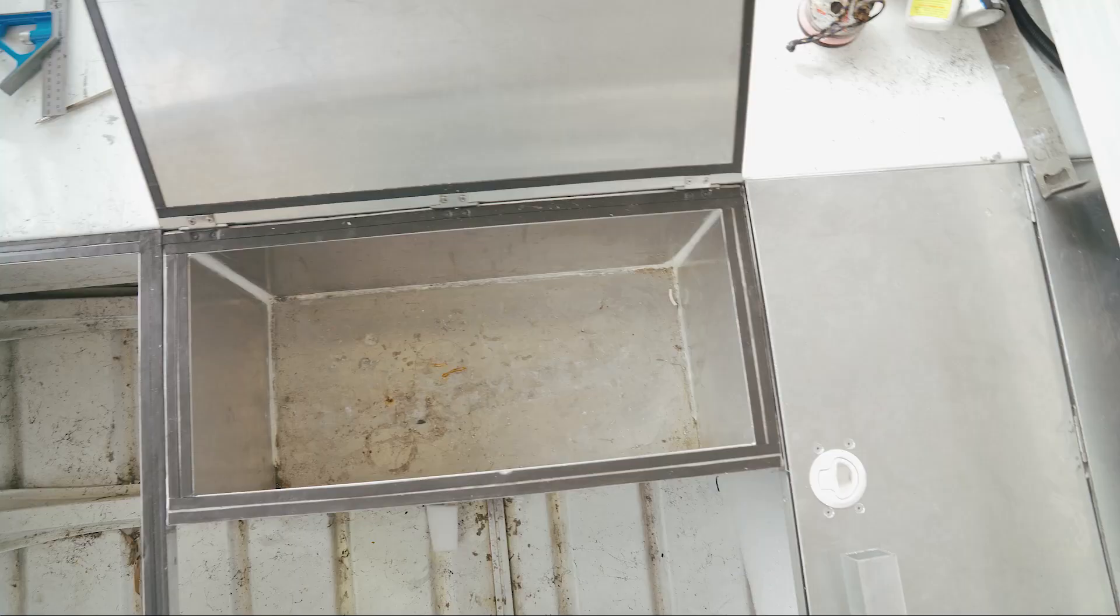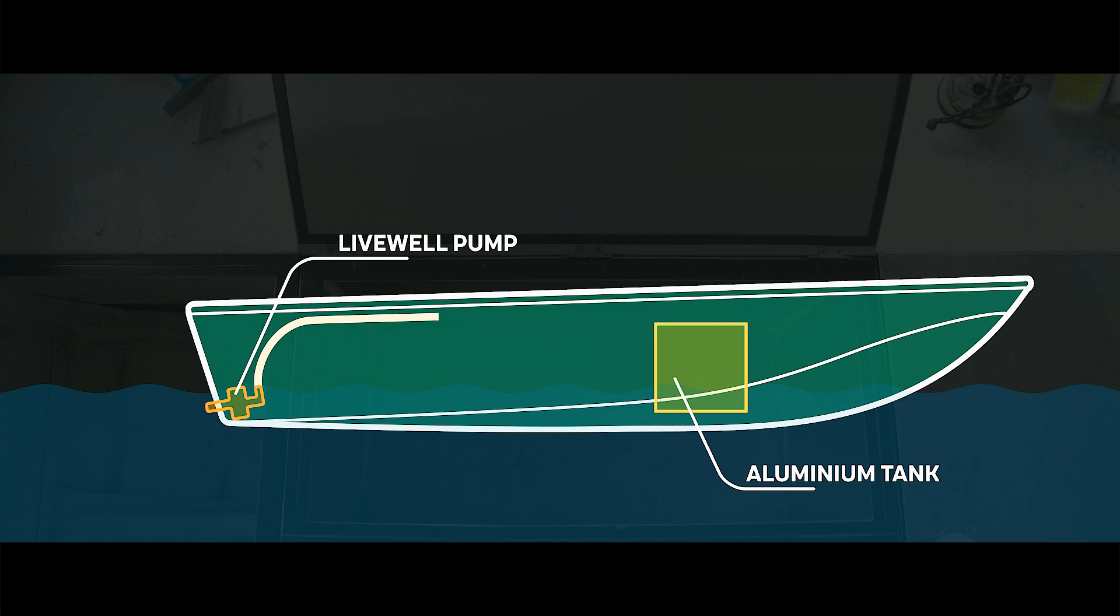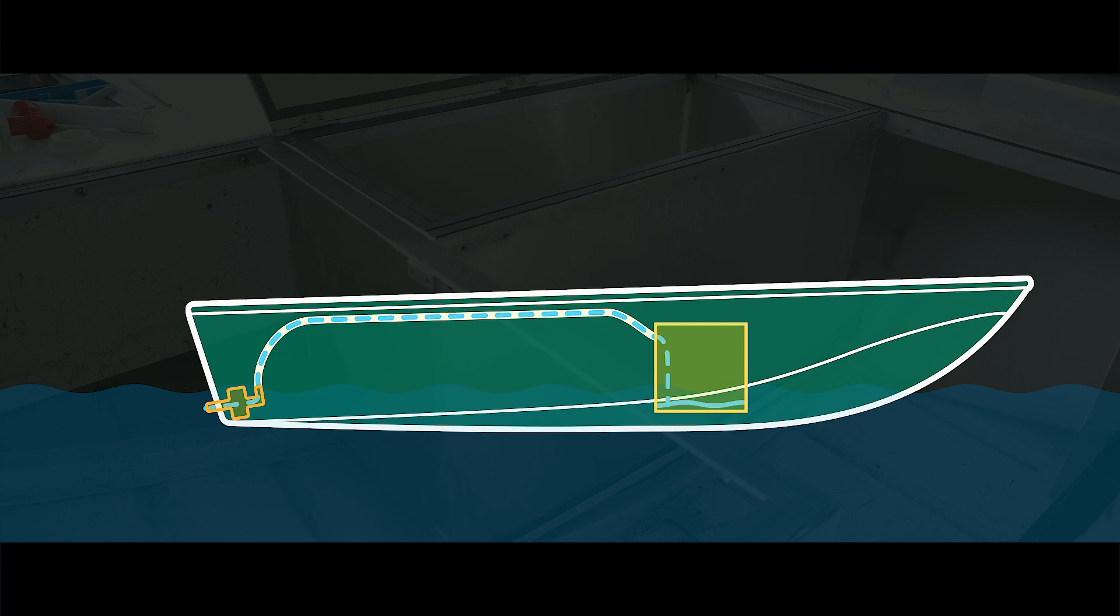The livewell intake pump pulls water from the transom of the boat through a hose and into an aerator nozzle. Before the tank can overflow, water reaches an outlet standpipe and gravity drains to the back of the boat.